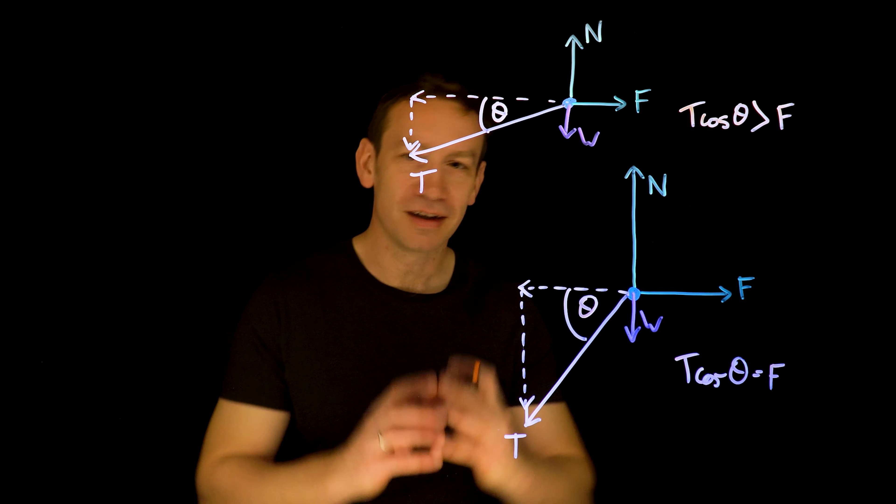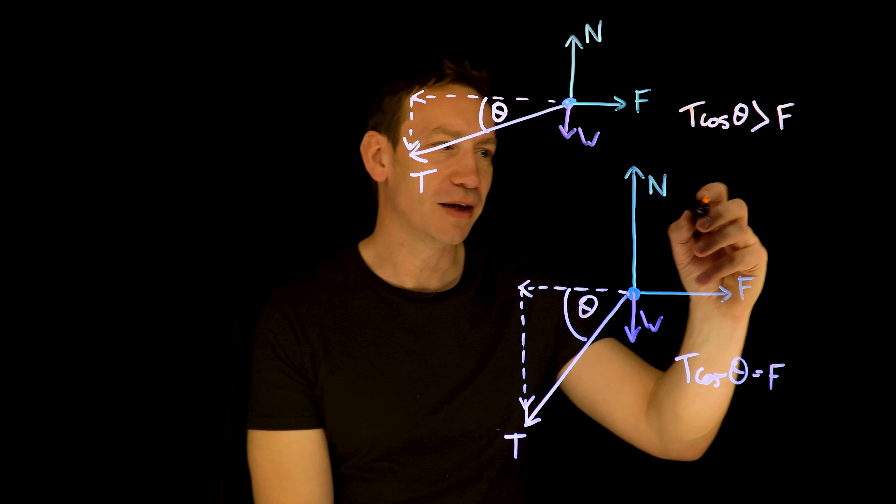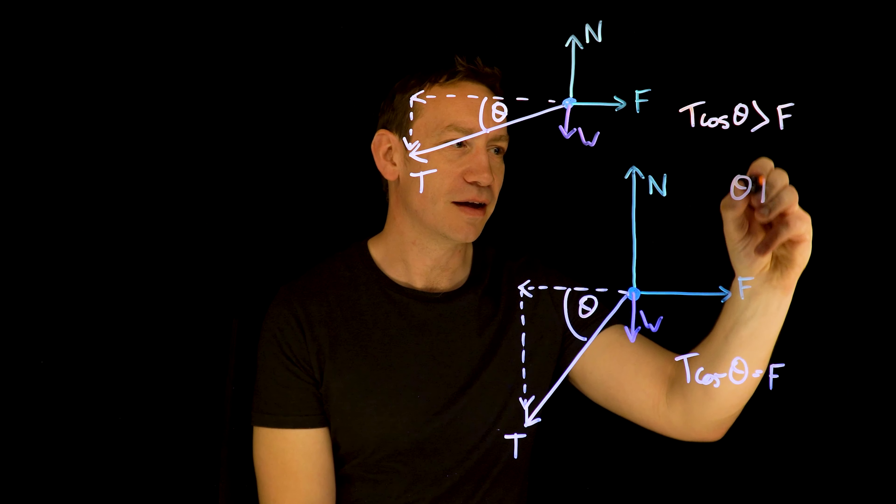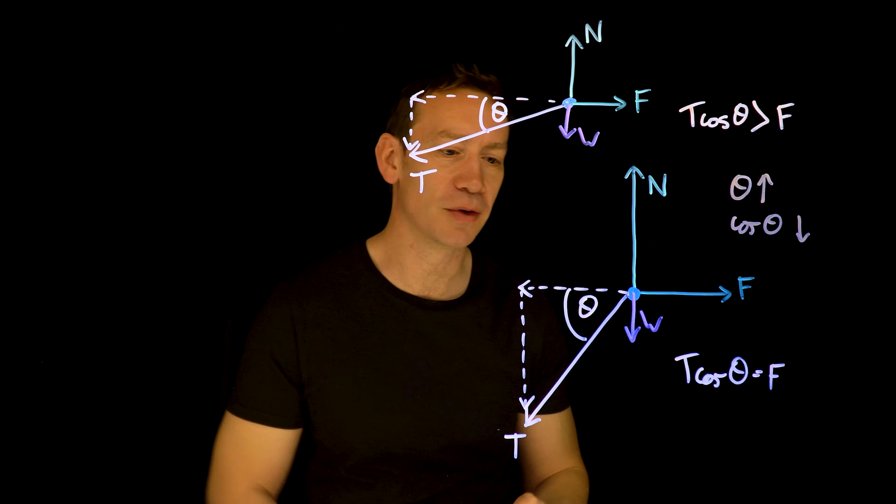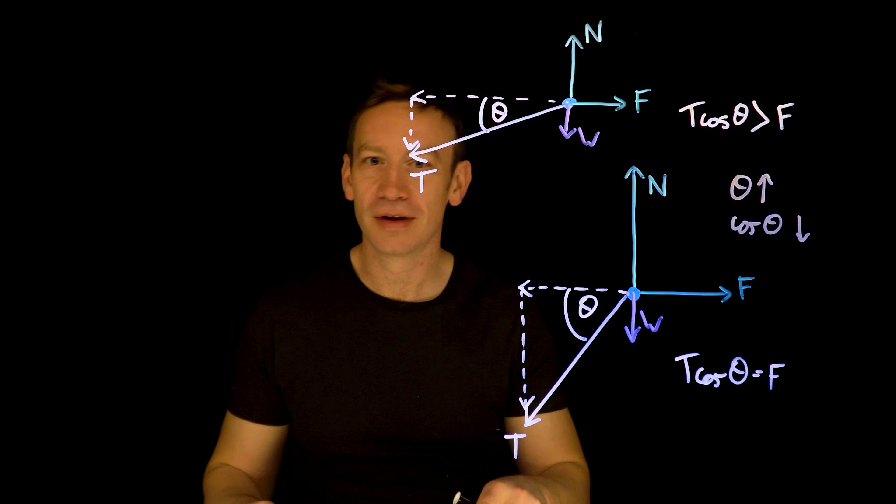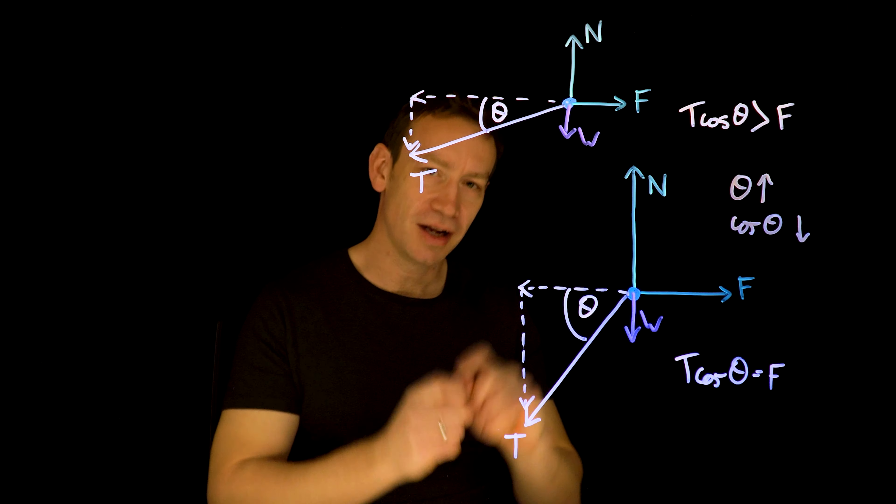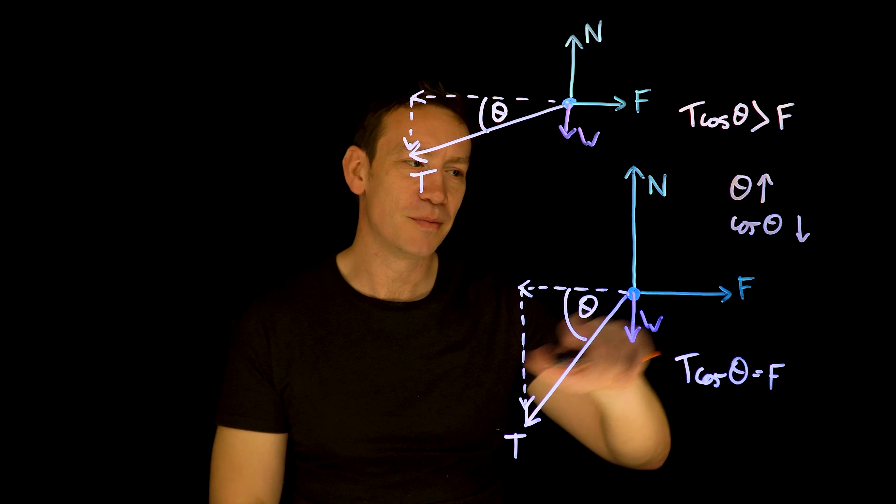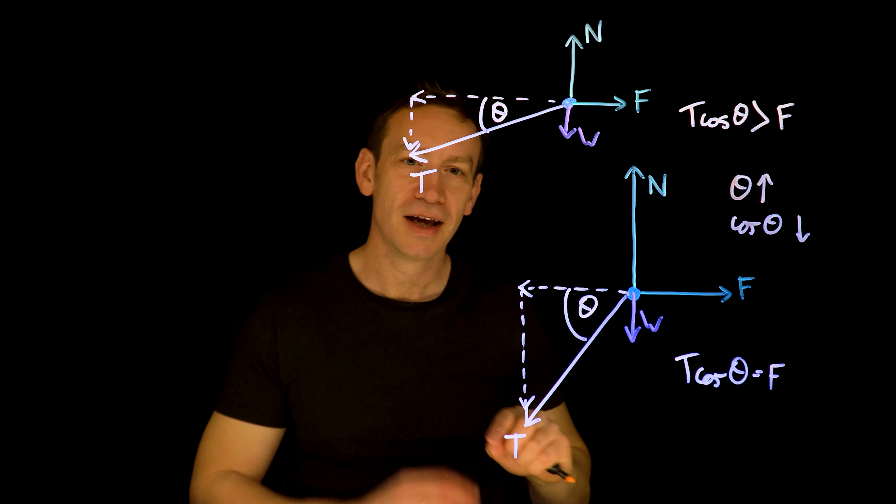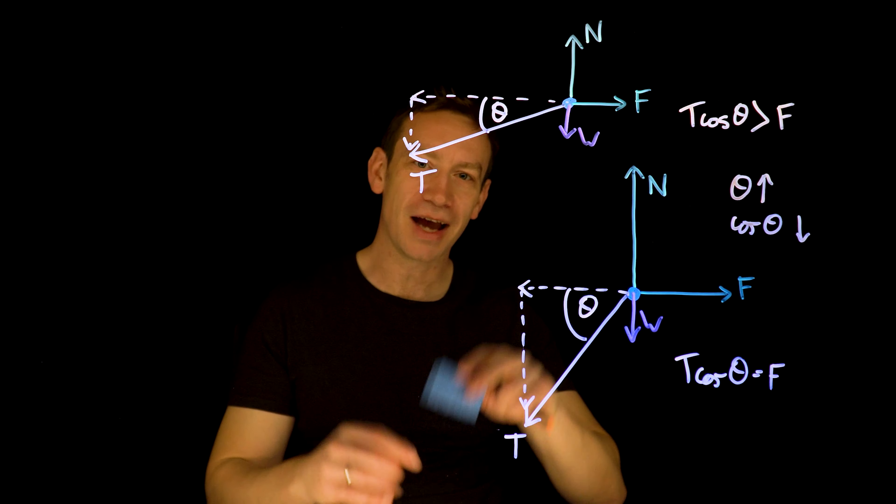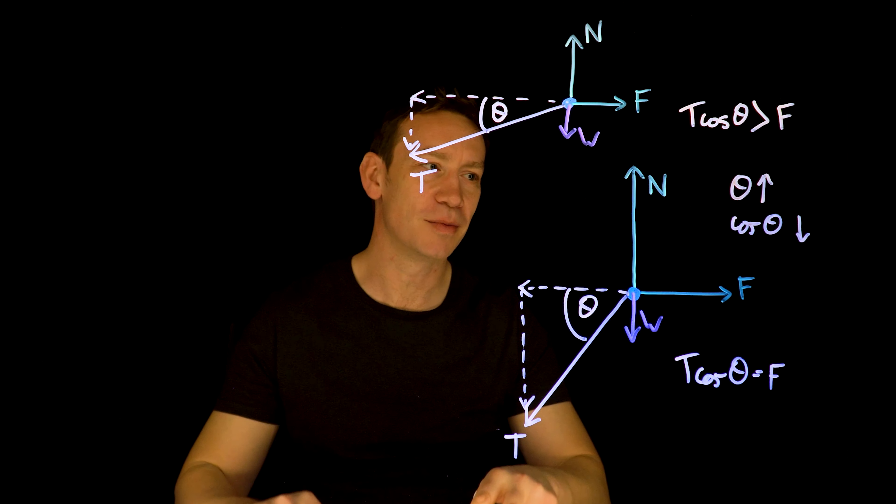So what we find are two things happen at the same time. First of all, as theta gets bigger, we can say that as theta gets bigger, cos theta gets smaller, and so as the block gets closer to the edge of the table, the horizontal component of force decreases. And I suppose at the same time, because this frictional force is going to be related to T sin theta, as the angle gets larger, we're going to have an increased size of frictional force between the block and the table.